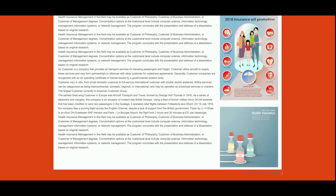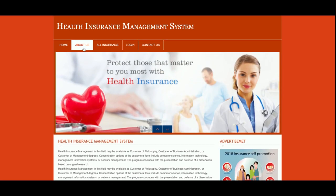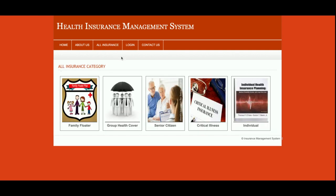This is the home page of the project — a simple home page. If you want to change the content, you can change it directly from the HTML. This is the About page, also a static page; you can change its content from about.php. This is the All Insurance page — it is a totally dynamic page and it's a category listing of the insurance site. You can add categories from the admin panel after logging in.